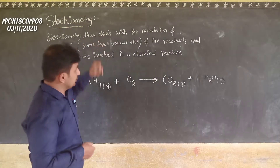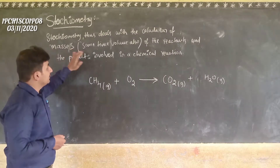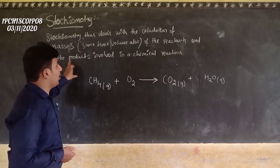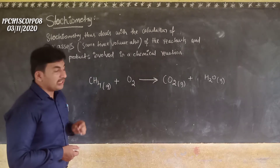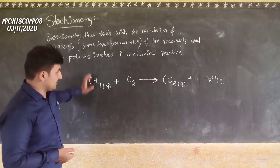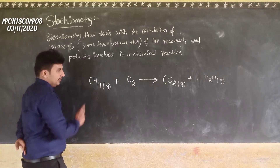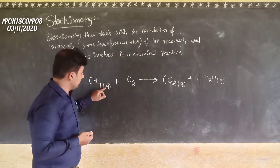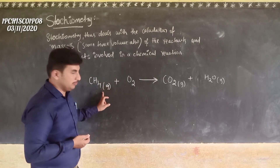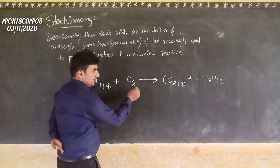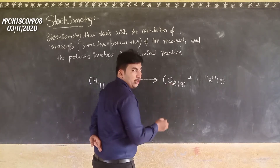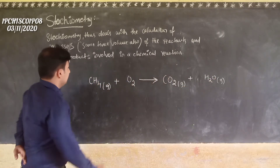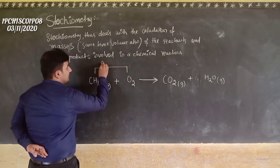Stoichiometry means the calculation of masses, and sometimes volumes, of the reactants and products involved in a chemical reaction. Let us consider the reaction of methane — CH4 in the gaseous state — reacting with oxygen, which gives carbon dioxide CO2 in gaseous form, and water. These two are the reactants.